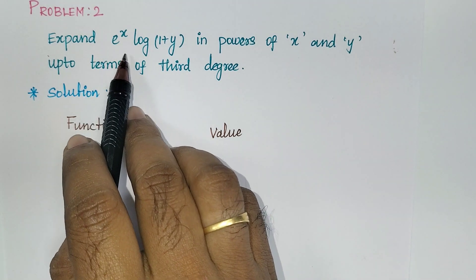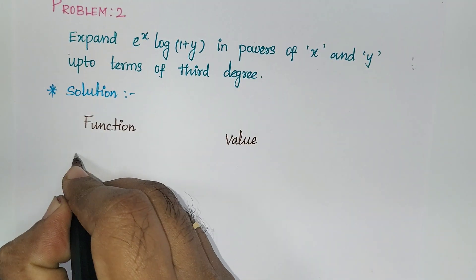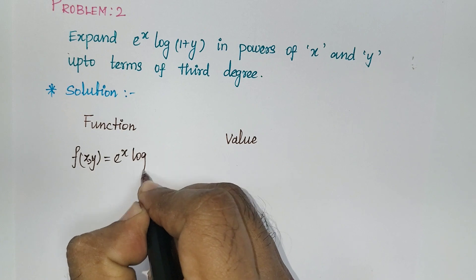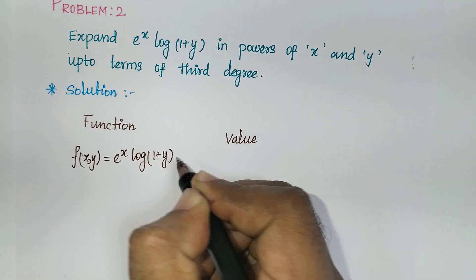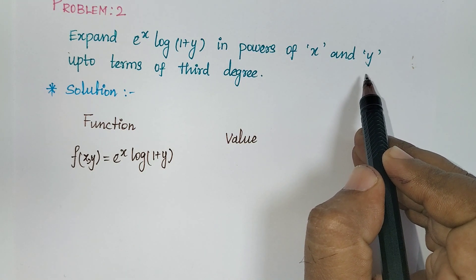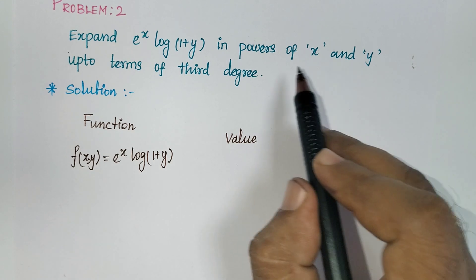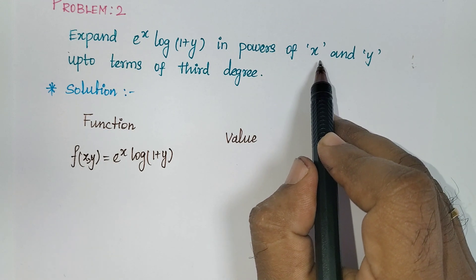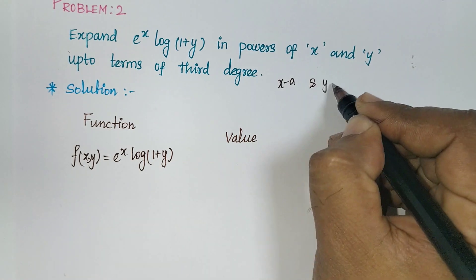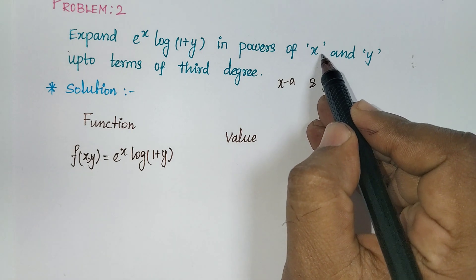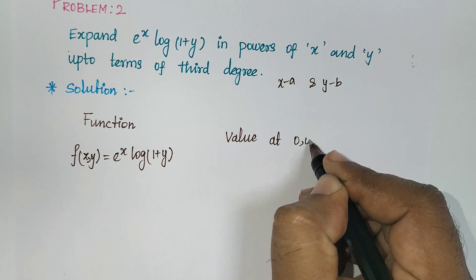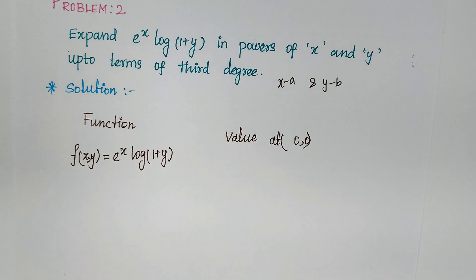But in this problem, you can see the function f(x, y) = e^x * log(1 + y). We need to expand this in powers of x and y up to terms of third degree. Since the problem says 'in powers of x and y,' there is no a and no b value given. You should understand that in the formula we use x minus a and y minus b — here a and b are both 0, so the point is (0, 0).